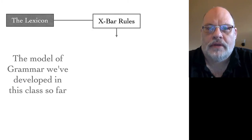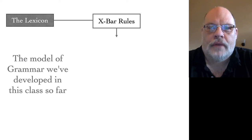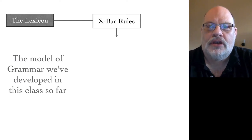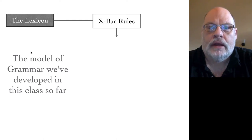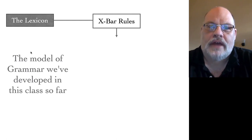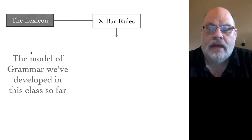In particular, it's going to tell you what items that word can appear with, or must appear with. The other side of the system is known as the computational system. The computational system contains all the information about how you combine words together into sentences. This is why it's known as the computational component, because it computes the syntax of the language. The computational system has a number of parts. One part that we've explored in great depth are the X-bar rules. The X-bar rules take the words out of the lexicon, combine them together in a variety of ways, very freely.